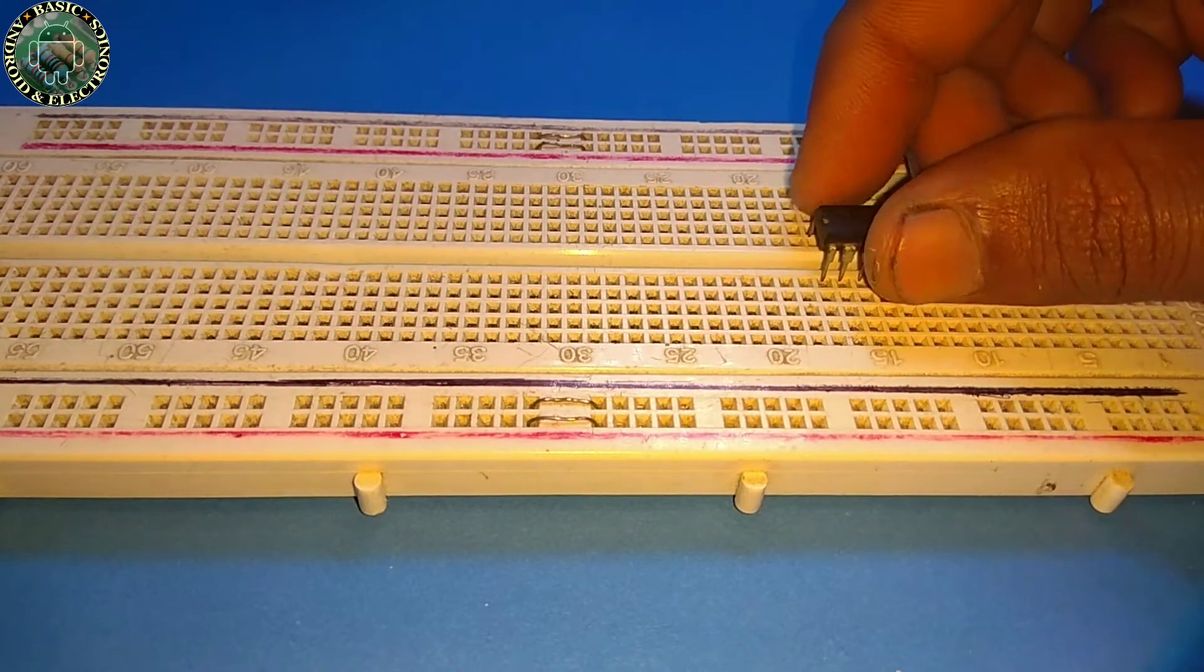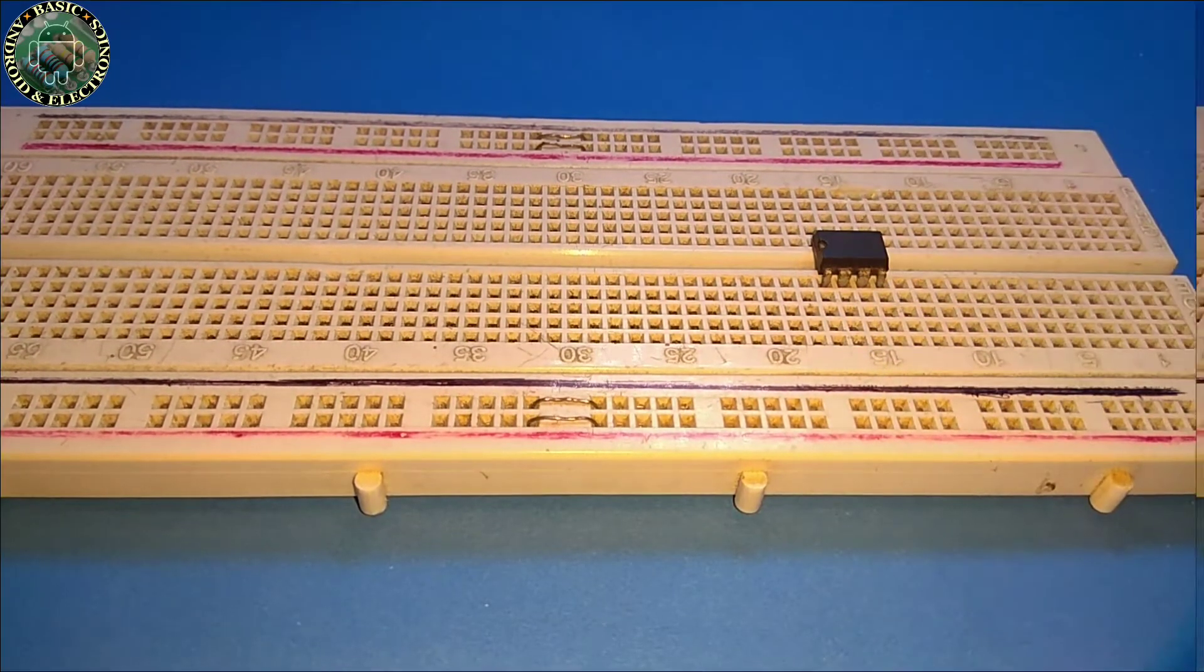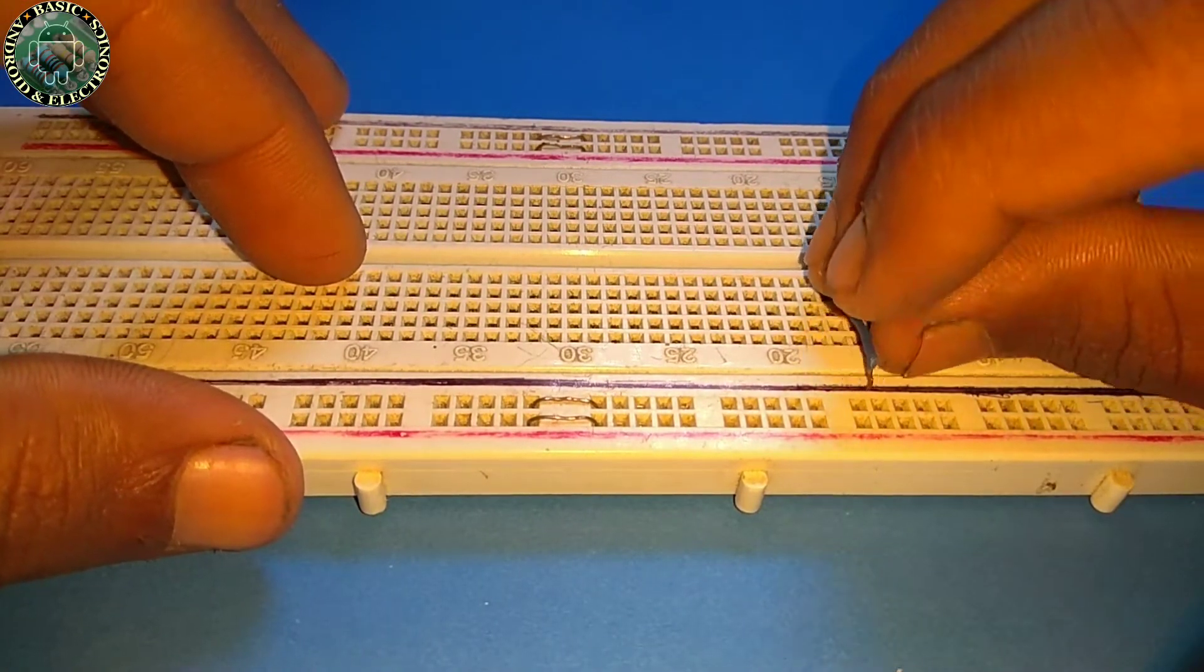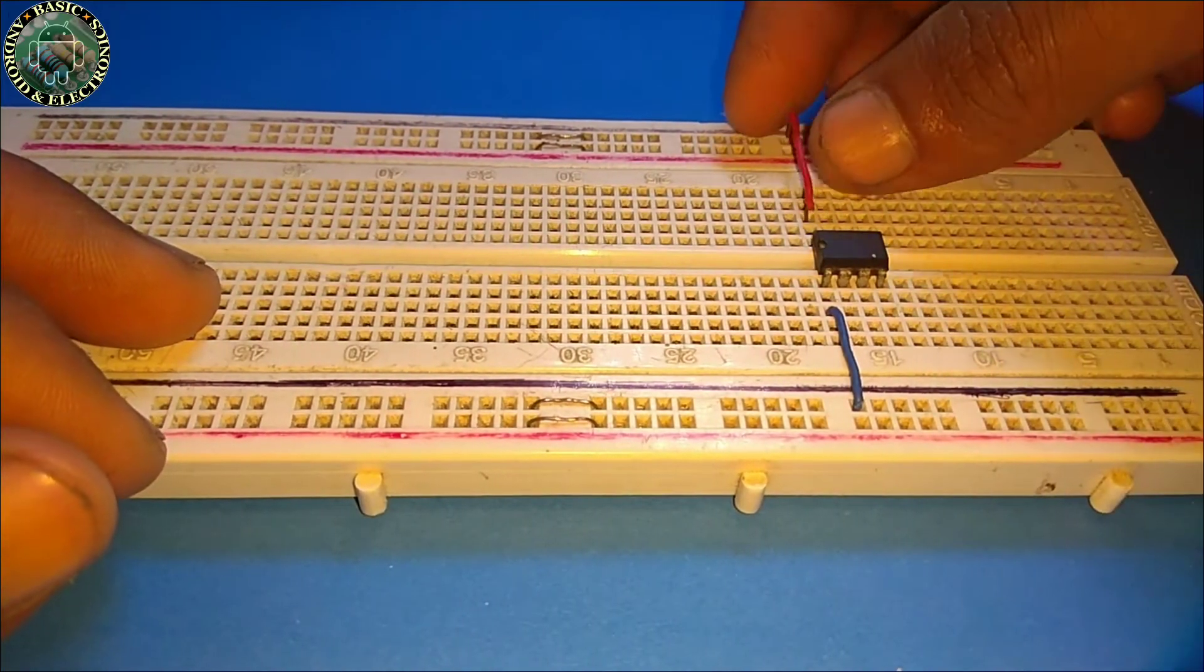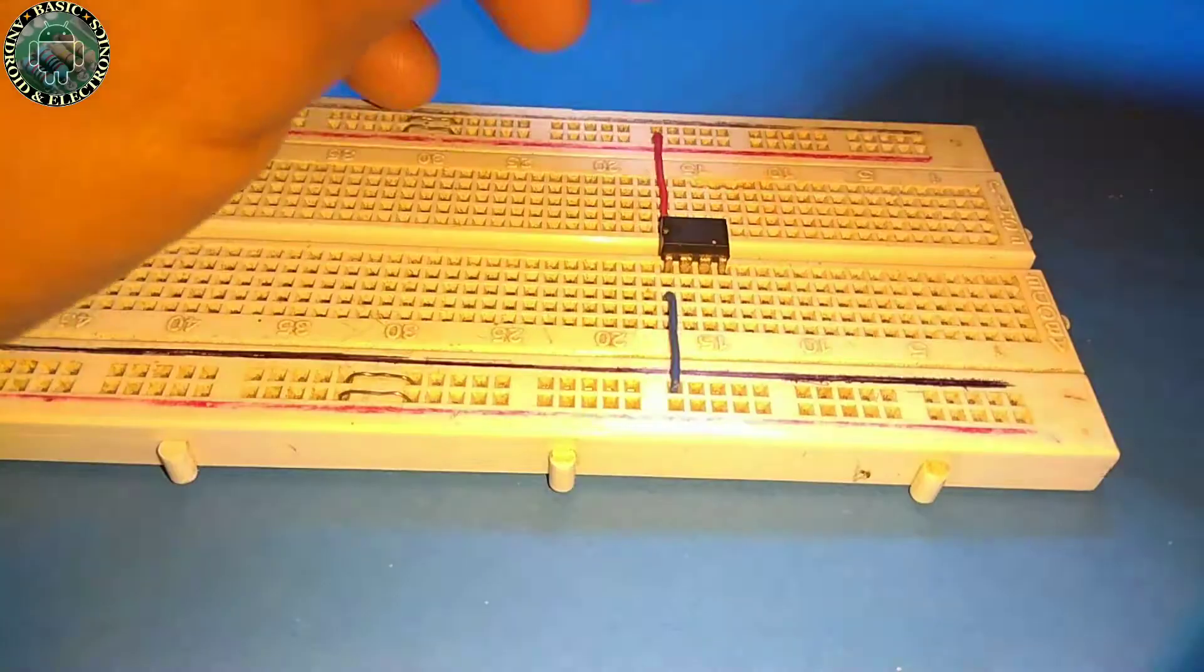Start by inserting 555 timer IC to the middle of the breadboard. Connect pin one of the IC to the negative rail of the breadboard. Now connect pin 8 and pin 4 of the IC to the positive rail of the breadboard.